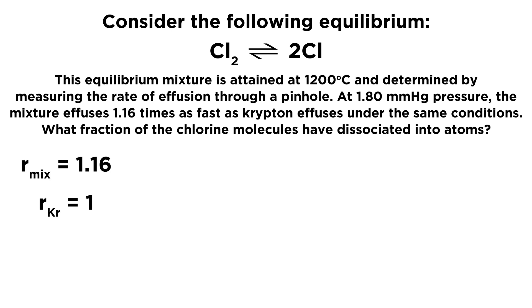So the first thing we're going to do is start with the information we're given. We're told that the mixture effuses 1.16 times as fast as krypton effuses, so we're just going to use this ratio. We're going to call the rate at which krypton effuses is going to be 1, and then therefore 1.16 times that will be the rate of effusion of the mixture, or just 1.16. Now in order to plug numbers into Graham's law of effusion, we also need molar masses. So the molar mass of krypton, we can get that from the periodic table, that's 84.